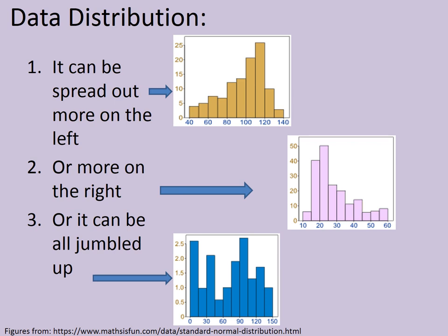To understand normal distribution, it is important to first understand different types of data distribution. On screen you can notice three figures explaining different types. In the first, data is spread out more on the left — for example, an MCQ test of 150 marks where questions are very easy, so most students score above 100 marks and very few score 40, 60, or 70.